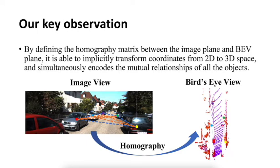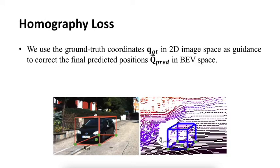Based on these observations, we want to implement the Homography from 2D image space to 3D bird's eye view space, which is able to implicitly transform coordinates from 2D to 3D space and simultaneously encode the mutual relationships of all objects. Therefore, we propose a novel loss function named Homography Loss.